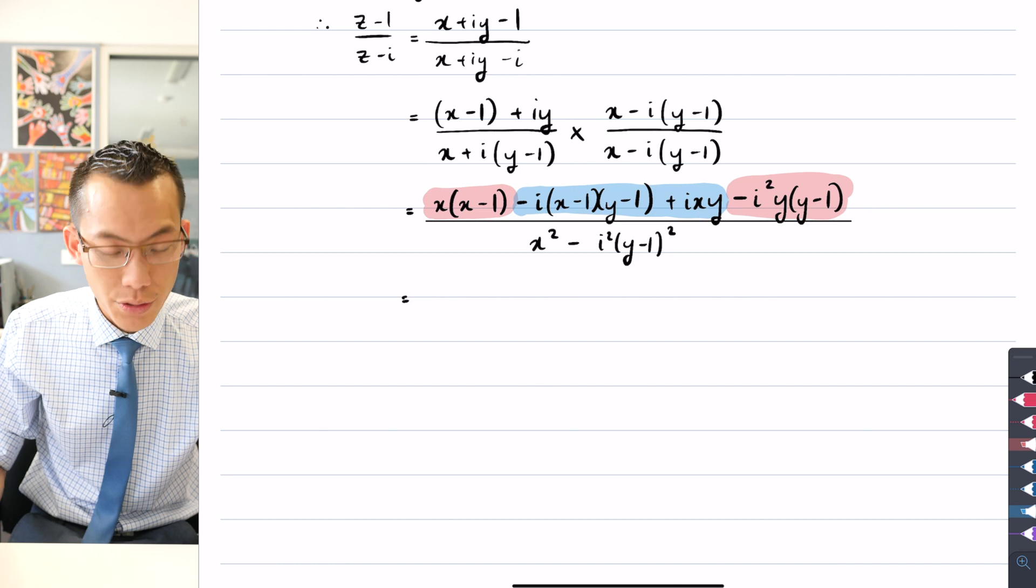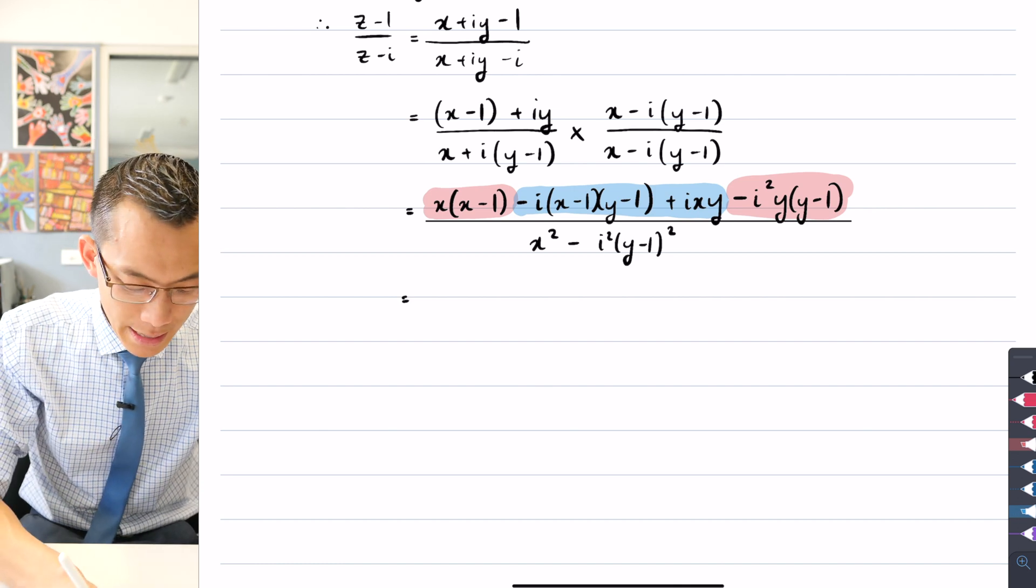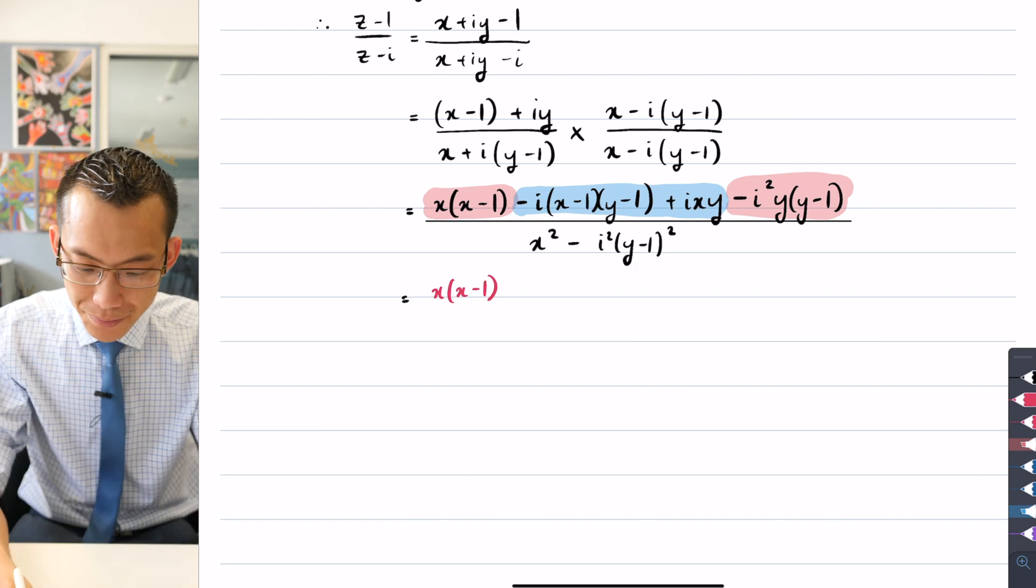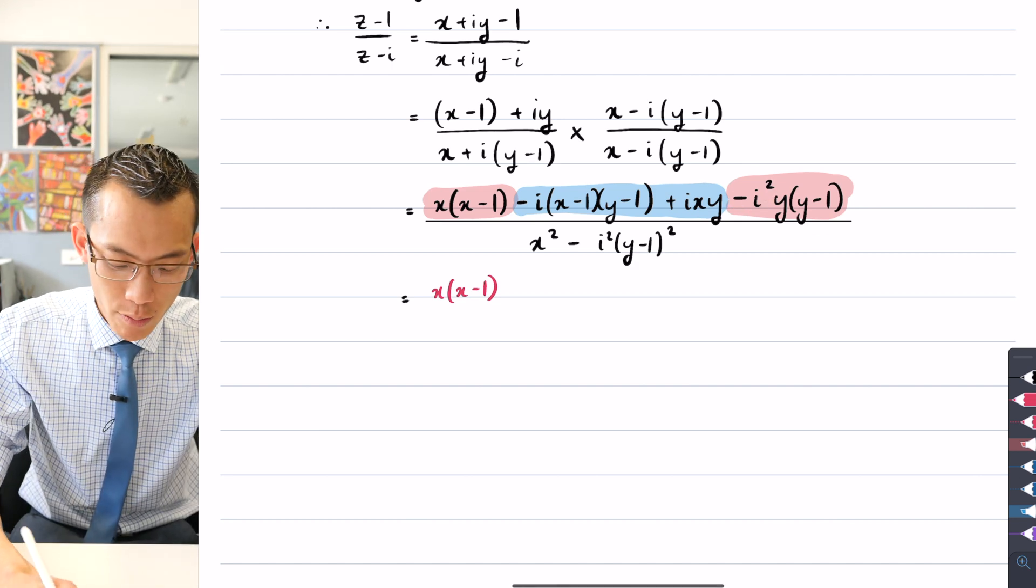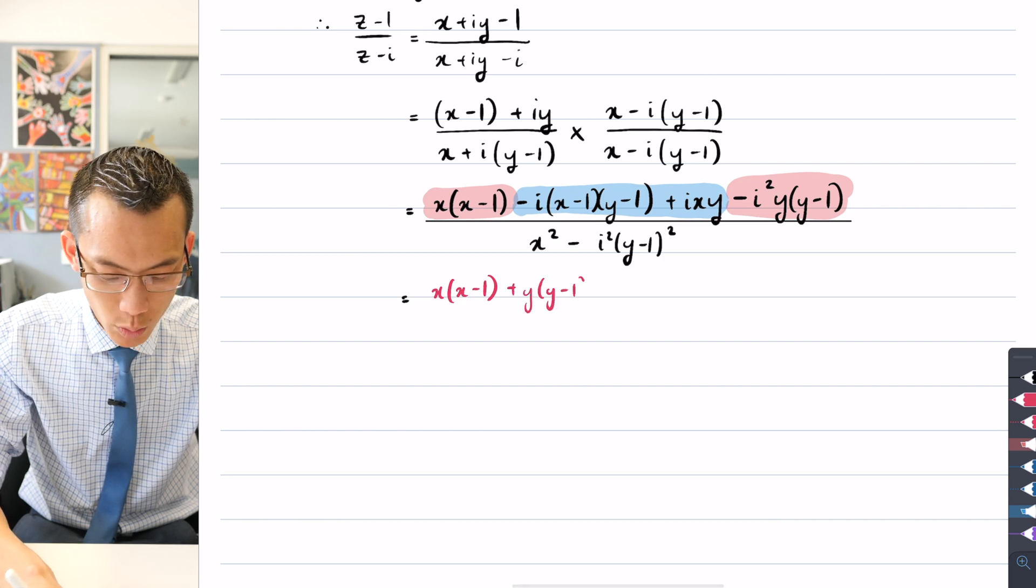So what I'm going to do is I'm going to separate them out. I get that x(x - 1) that's out the front, and then this becomes, minus i squared is plus 1, so that will be plus y(y - 1). That looks good.